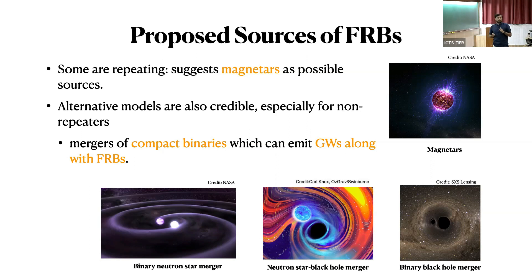These are especially the sources of repeating fast radio bursts, but there are alternative models which are also credible, especially for non-repeating fast radio bursts where you only see single pulses. This includes mergers of compact binaries, which also emit gravitational waves along with fast radio bursts. Among these compact binary coalescences, this includes a merger of two neutron stars, known as binary neutron star merger, and also neutron star black hole merger, and binary black hole merger.